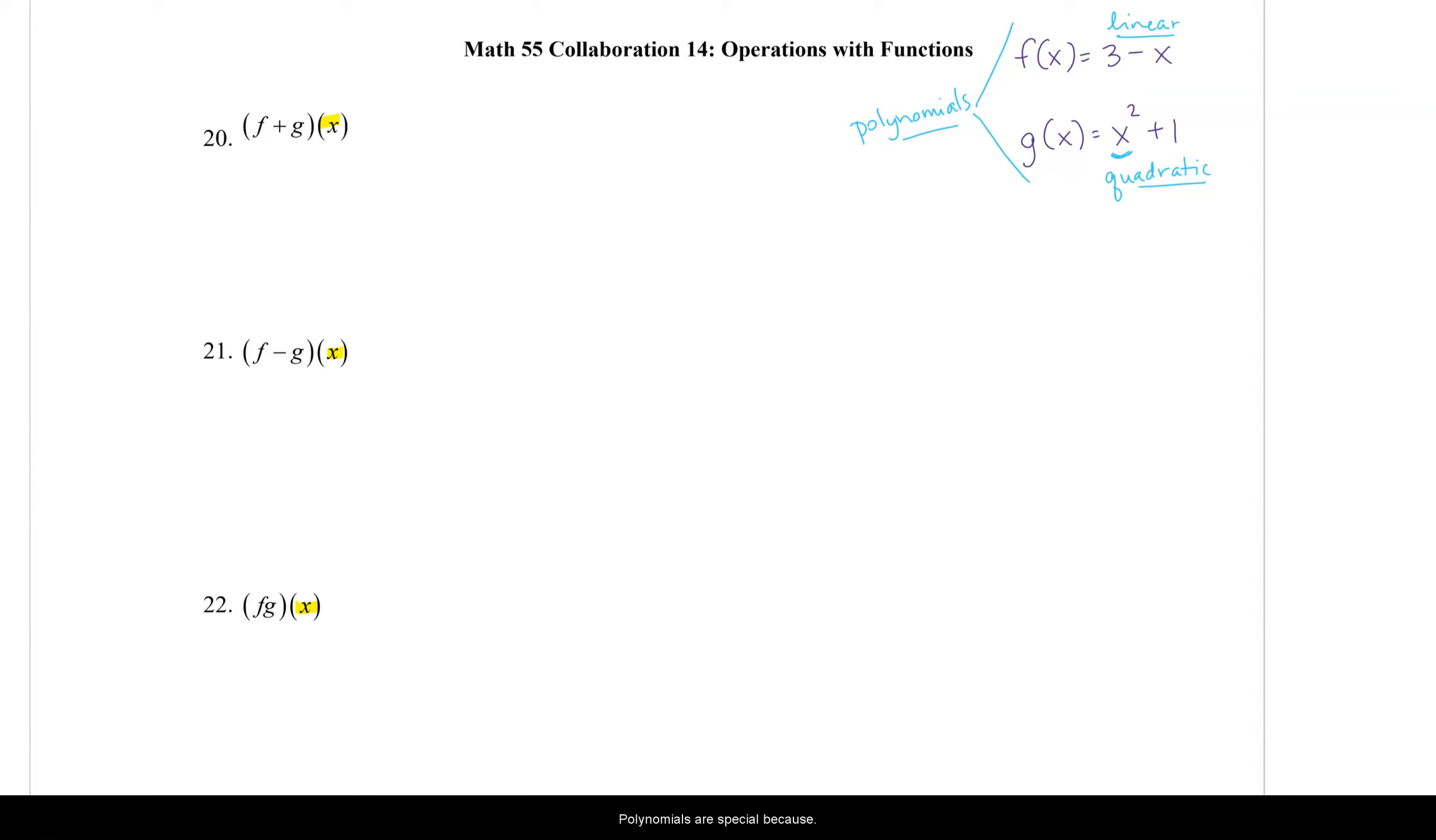Polynomials are special because all polynomials have the same domain. The domain of our polynomial functions, all polynomial functions, is all real numbers. So the domain of our polynomial functions, all polynomial functions, is all real numbers.